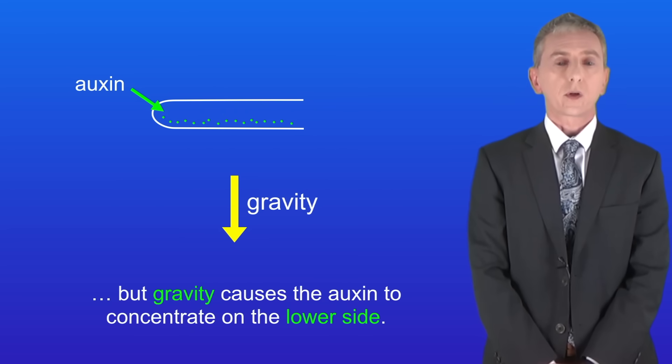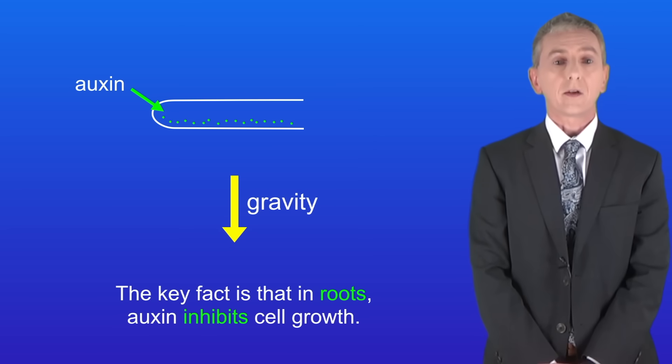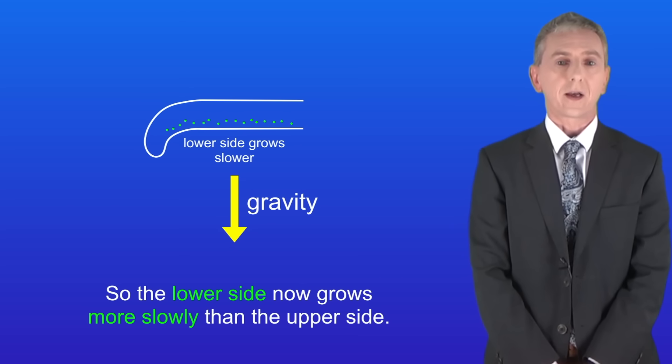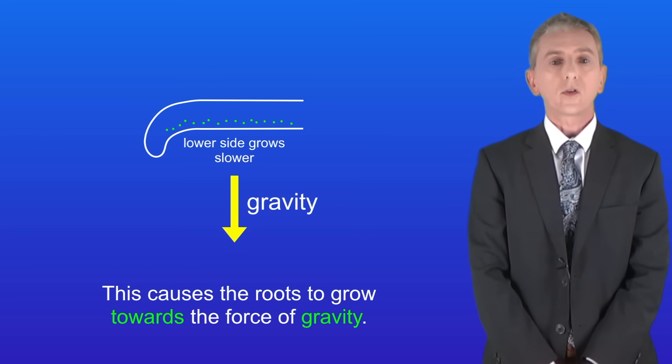Auxin is produced in the root, but gravity causes the auxin to concentrate on the lower side. Now the key fact is that in roots auxin inhibits cell growth, so the lower side now grows more slowly than the upper side, and this causes the roots to grow towards the force of gravity.